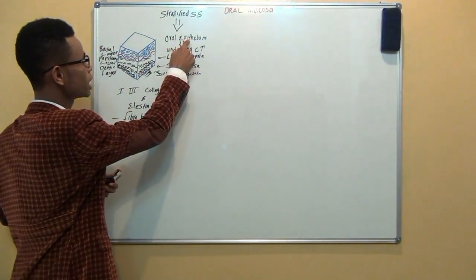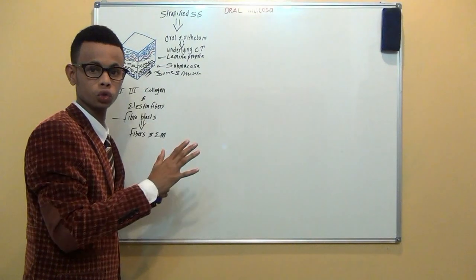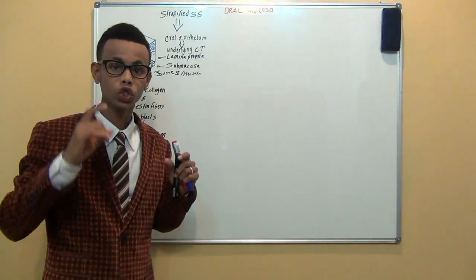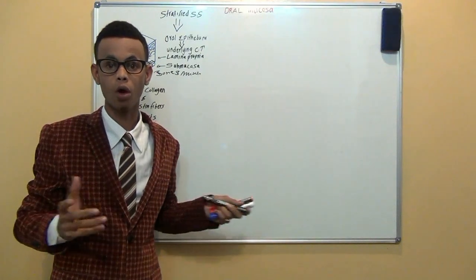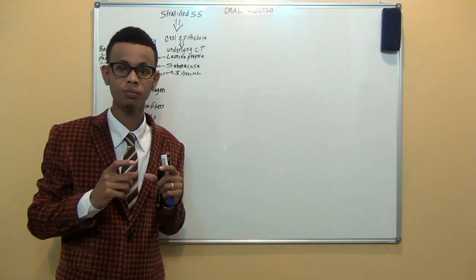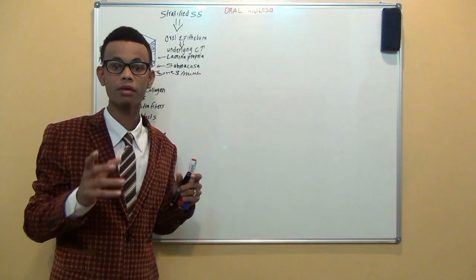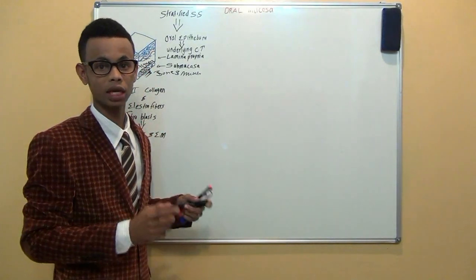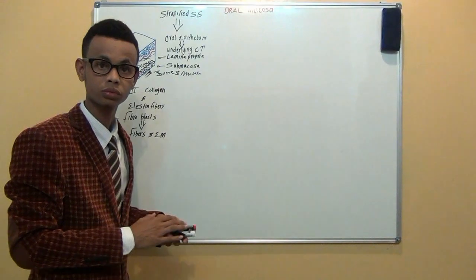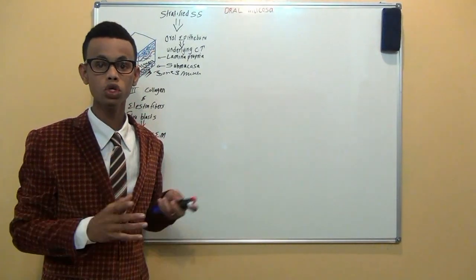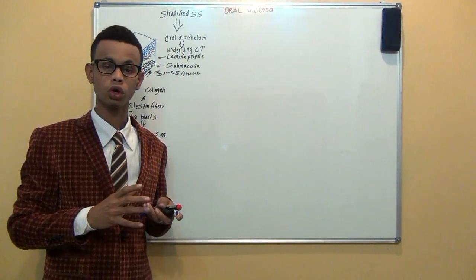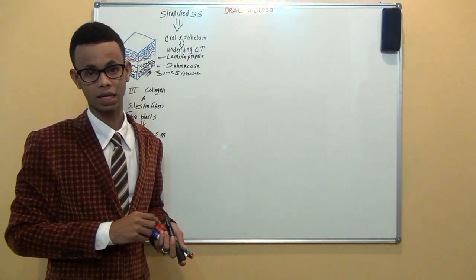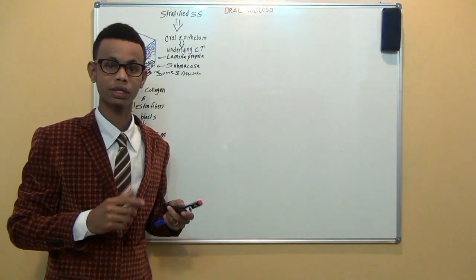Remember, epithelium is avascular tissue, which means there is no blood supply. For that reason, you could ask how does it get nutrients and water. Because the epithelium contacts directly with the environment and connective tissue, nutrients and water pass through by diffusion. The oral mucosa forms a transition between the skin and the gastrointestinal tract.